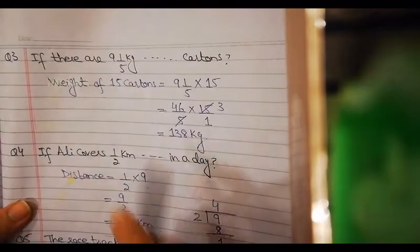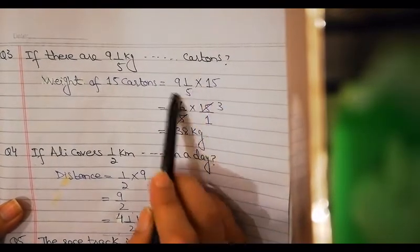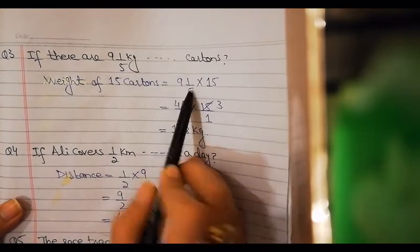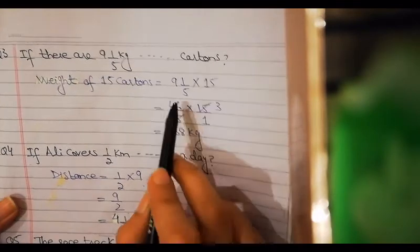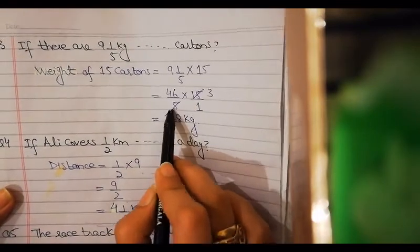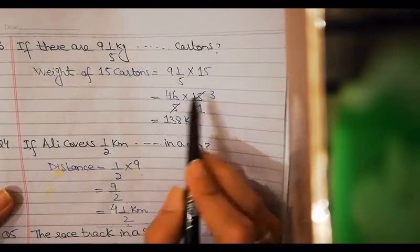Look at here. Weight of 15 cartons equals 9 whole 1/5 multiplied by 15. You have this in mixed fraction, you have to convert it to improper fraction. After converting it, you can cut 5 and 15. The common divisor is 5.